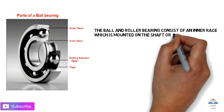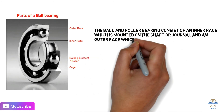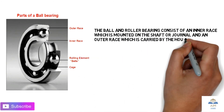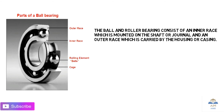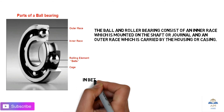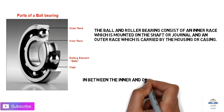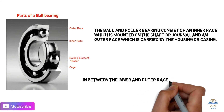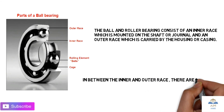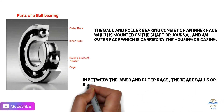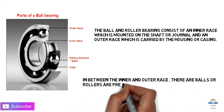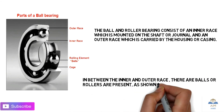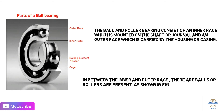The ball and roller bearing consists of an inner race, which is mounted on the shaft or journal, and an outer race, which is carried by the housing or casing. In between the inner and outer race, there are balls or rollers, as shown in this figure.